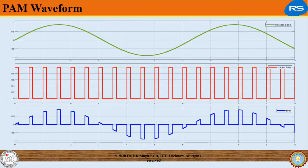Basically, PAM is a Pulse Modulation System in which the signal is sampled at regular intervals and each sample is made proportional to the amplitude of the signal at the instant of sampling.